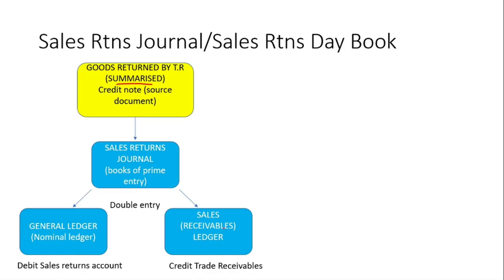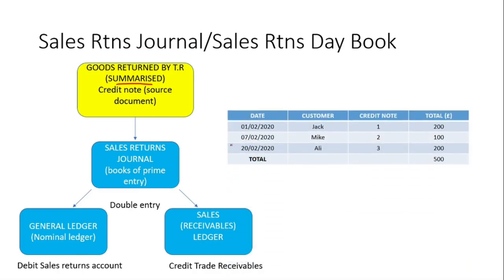Looking at this as a table from the Sales Returns Journal, we're going to have dates, the details of our customers, and this time we're going to have a credit note. The total you see here will be debited in the Sales Returns Account and credited in our Trade Receivables Account.